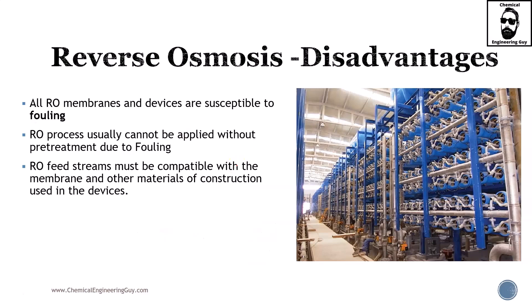All RO membranes and devices are susceptible to fouling. If you have sand or particulates larger than the ions, they will eventually deposit on the membrane. RO processes usually cannot be applied without pre-treatment — you need to pre-treat the seawater before sending it to the RO unit. Additionally, RO feed streams must be compatible with the membrane and other materials of construction used in the device.